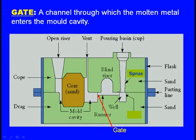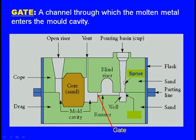Next, the gate: molten metal passes through the pouring cup, sprue, and runner. Between the runner and the mould cavity there is a small cross-section which is the entrance for the molten metal into the mould cavity. This entrance is known as the gate — a channel through which the molten metal enters the mould cavity.